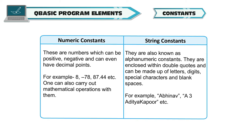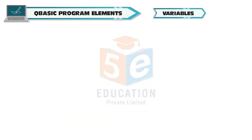They are enclosed within double quotes and can be made up of letters, digits, special characters and blank spaces. For example, Abhinav, A3, Aditya Kapoor, etc.